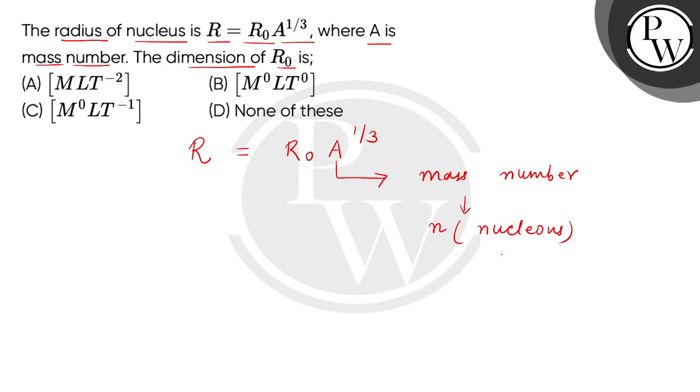Now what are nucleons? That will be representing neutrons and protons. So basically the mass number represents the number of neutrons plus protons in the nucleus.